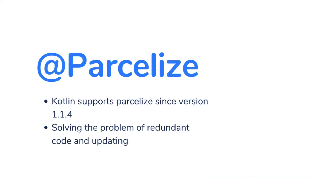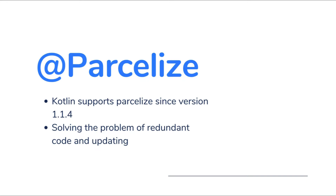Kotlin supports Parcelize since version 1.1.4, solving the problem of redundant code and updating parcelable when changing the model. You need to define and add the @Parcelize annotation, and the write-to-parcel and create-from-parcel methods will be generated automatically.